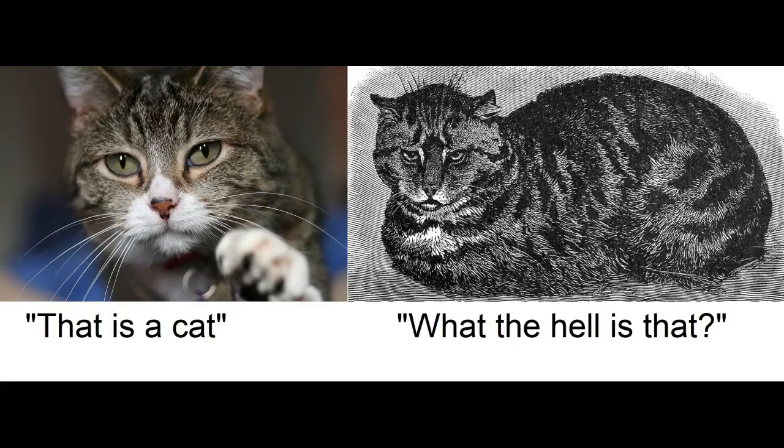Visual agnosia is a term used to describe the inability to combine individual elements into a cohesive whole, resulting in the inability to recognize or name objects or draw them. In the case of DF, carbon monoxide poisoning left her with a series of interesting visual deficits. She could see normally and move about the world with good vision, and she could recognize objects presented to her — but not images of those objects. She could draw objects from memory, but not real ones in front of her.